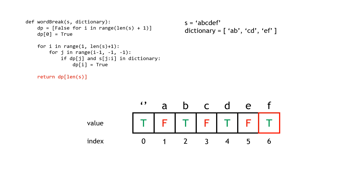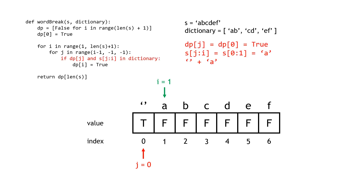The last position in the array represents whether we can form the entire string with the dictionary — this is exactly the overall question of the problem, so this is what we return at the end. We must manually set the first position to true, since position zero represents the empty string and the answer is always true. Every other slot starts as false. We then move into the for loop, starting I at index one, with an inner J loop starting at I minus one.